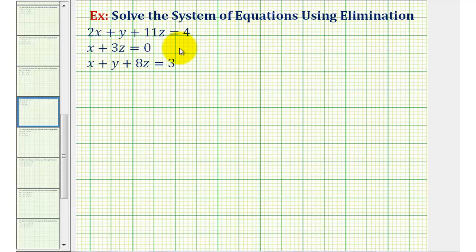Welcome back for another example of solving a system of three linear equations with three unknowns using the elimination method. It's important to keep in mind that when solving a system like this, there's actually three possibilities. We can have one solution, no solution, or an infinite number of solutions.